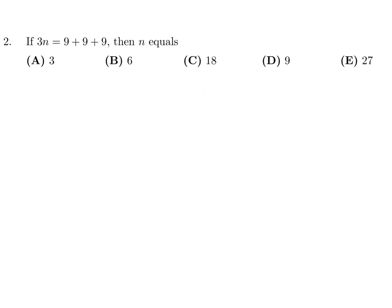If 3n is equal to 9 plus 9 plus 9, then n equals? 3n is 9 plus 9 plus 9, that's 27. 3n equals 27, divide through by 3. 27 divided by 3, n is equal to 9. Number 2, the answer is D.